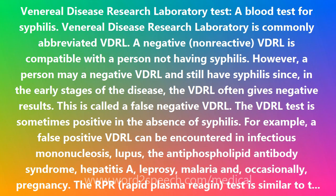The RPR test is similar to the VDRL test. It is also designed to detect an antibody substance in the bloodstream when syphilis is present, but, as with the VDRL, early syphilis infections may give a false negative RPR result. The RPR, like the VDRL, can also give false positive results.